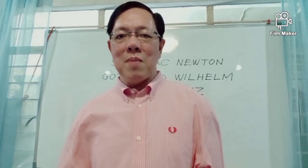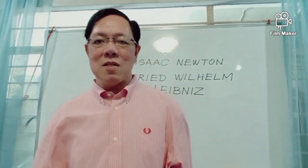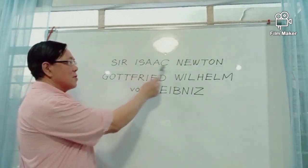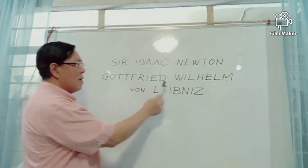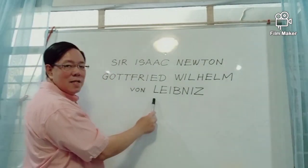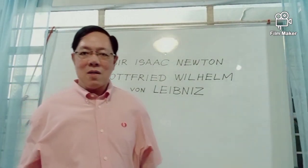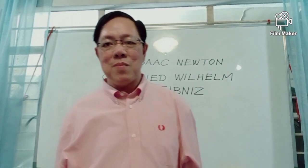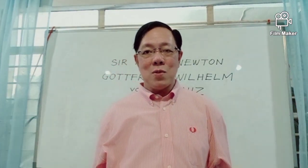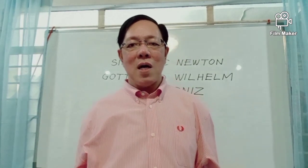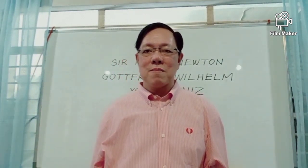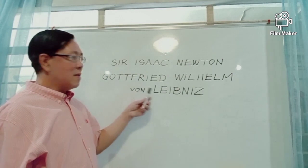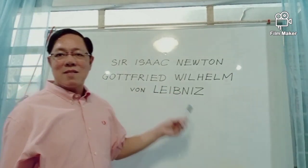Calculus was developed by two of the most brilliant mathematicians of all time. These two mathematicians were Sir Isaac Newton and Gottfried Wilhelm von Leibniz. They developed calculus independently during the 17th century. There were some controversies about the development of calculus, and if you would like to know more, try to investigate and read the history of calculus. Sir Isaac Newton was English, while Gottfried Wilhelm von Leibniz was German.